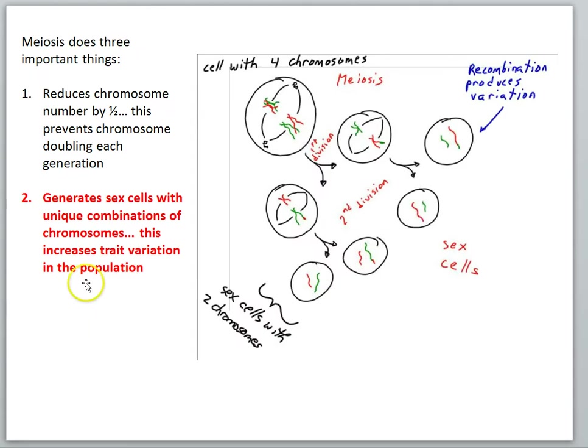Now, the result of that is our second important thing that meiosis does. It generates sex cells with unique combinations of chromosomes. And this increases trait variation in the population.